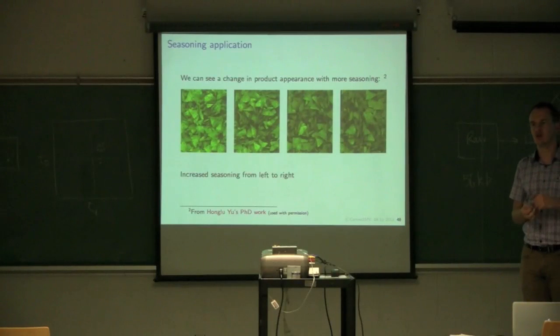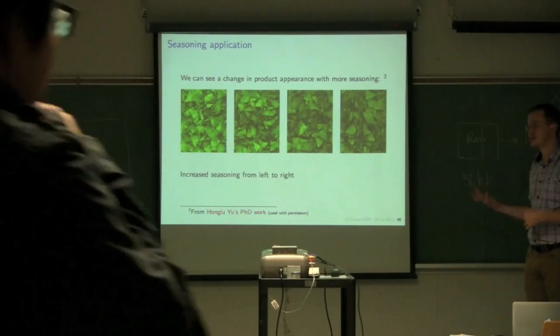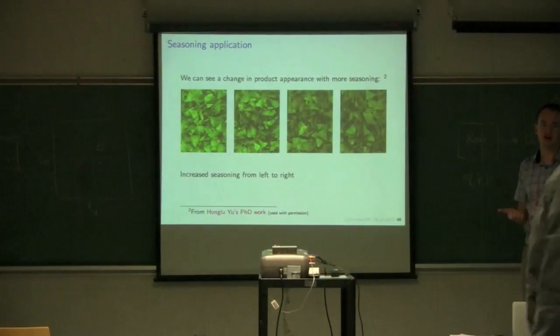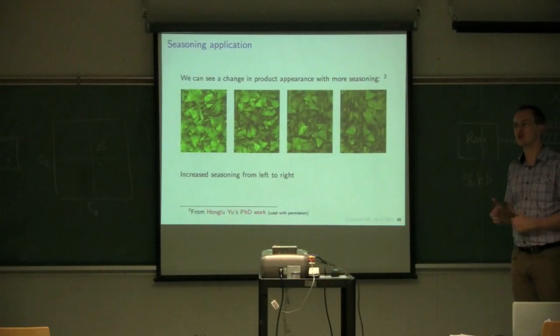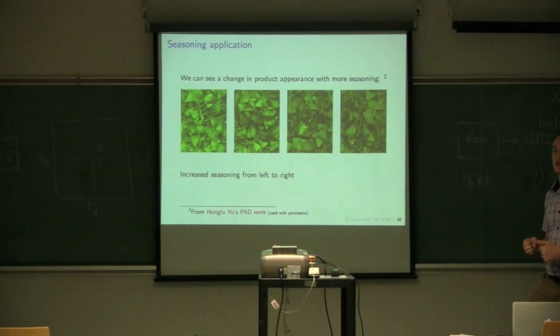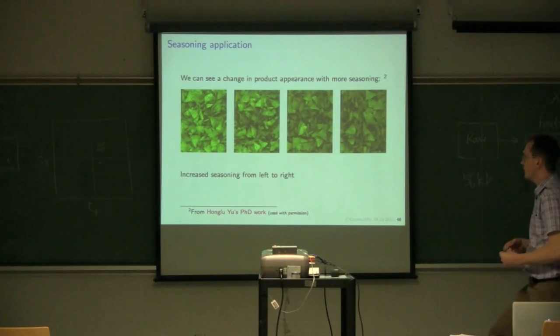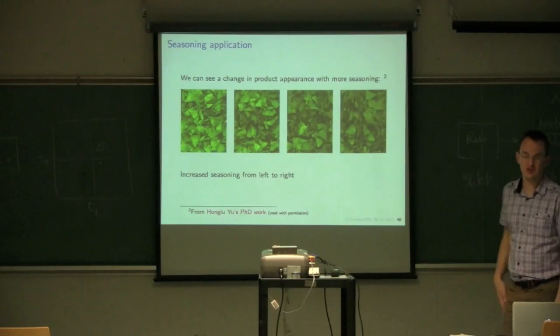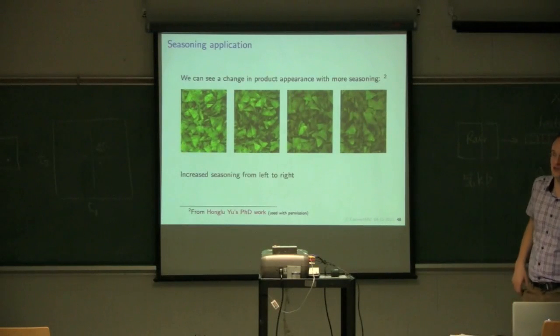What I'm going to show is, I think it's version five out of six. So Honglu's thesis considers six different ways to predict the seasoning. The sixth method is the method that's actually used in practice. I'm just going to show a slightly reduced version to illustrate the concept of using the score space rather than the image space to make a prediction.